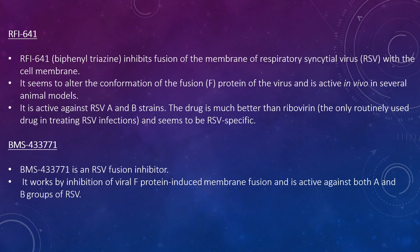Looking at RFI-641, also known as biphenyl triazine, this inhibits fusion of the membrane of the respiratory syncytial virus with the cell membrane. It alters the conformation of the fusion protein of the virus and is active in vivo in several animal models. It is active against RSV A and B strains, much better than ribavirin, which is routinely used in treating RSV. It seems to be RSV-specific. It was abandoned for routine use because of toxicity problems and delivery problems.